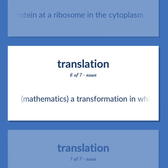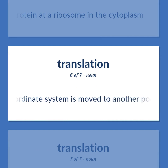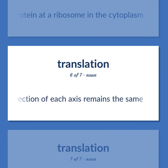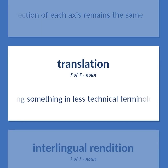Translation (Mathematics): A transformation in which the origin of the coordinate system is moved to another position but the direction of each axis remains the same. Also: rewording something in less technical terminology.